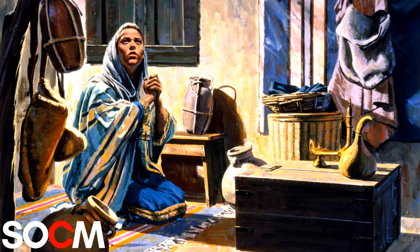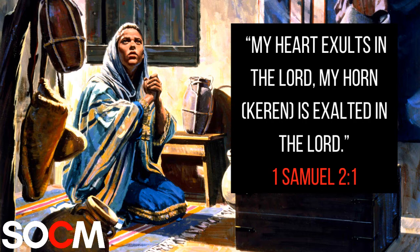Let us take a look at a scripture that uses the term keren in relation to a human being to demonstrate this fact. In 1 Samuel chapter 2 and verse 1, Hannah's prayer reads: 'My heart exalts in the Lord. My horn is exalted in the Lord.' When Hannah uses the word horn here, she is not speaking of a literal horn bursting through her body, but rather she is trying to convey her strength as shooting forth out from her.